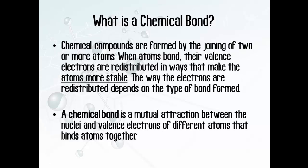So first off, what is a chemical bond? Chemical compounds are formed by the joining of two or more atoms. When atoms bond together, their valence electrons are redistributed in ways that make the atoms more stable, and essentially they are bound together — that's why we call it a chemical bond. The key idea here is that the valence electrons are involved, and the way the electrons are redistributed determines the type of bond that's formed.